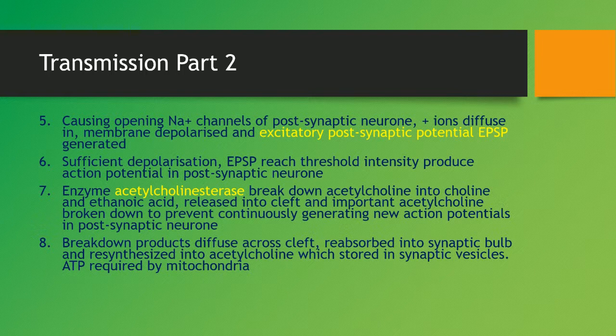These breakdown products are released back into the synaptic cleft and reabsorbed. This is important because breaking down acetylcholine prevents continuously generating new action potentials in the post-synaptic neuron. The breakdown products diffuse across the cleft and are reabsorbed into the synaptic bulb where they are resynthesized into acetylcholine, which is then stored in synaptic vesicles. This process is powered by ATP supplied by the mitochondria.